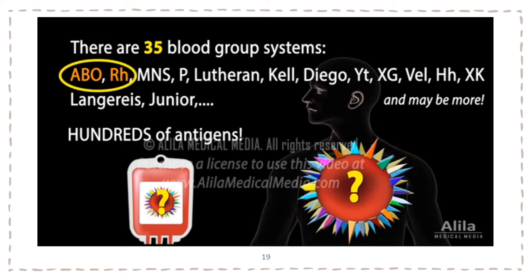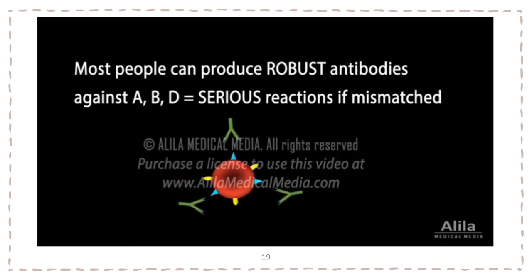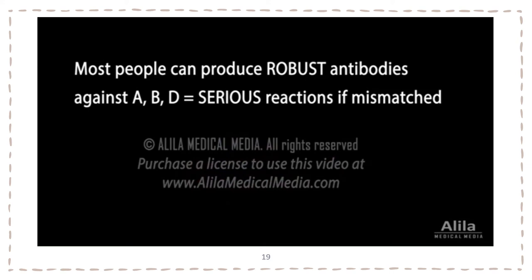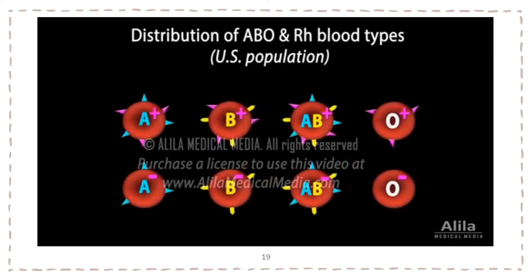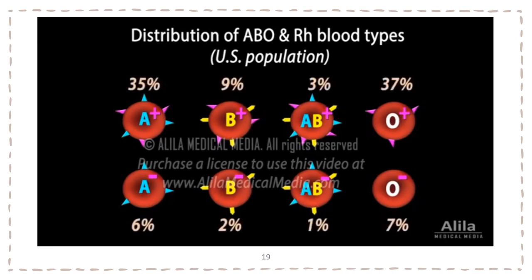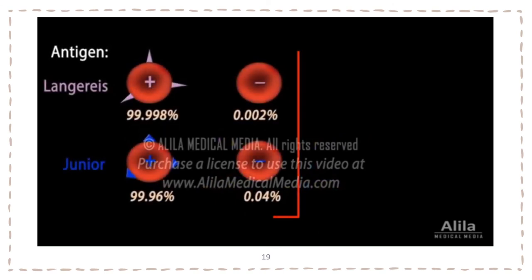The ABO and RH systems are the most important in blood transfusion for two reasons. First, most people can produce robust antibodies against A, B and D antigens — in fact, anti-A and anti-B antibodies are usually developed during the first year of life. Second, the eight basic blood types are distributed in comparable proportions that makes mismatching a likely event. Most other antigens occur at such frequencies that only a very small subset of patients is potentially at risk.